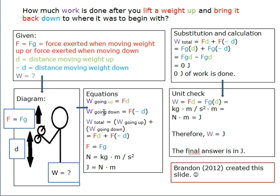So when you do work Fd on the weight lifting up, and gravity does work F times negative d on the weight lowering back down, you get this equation. And you substitute F with Fg here to here, you multiply, and you'll find that the total work that the weights receive is Fgd minus Fgd.